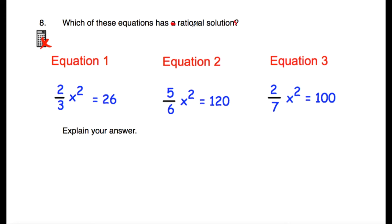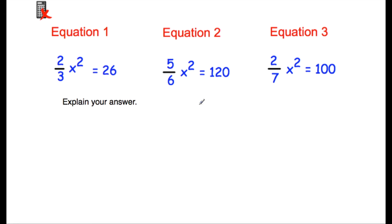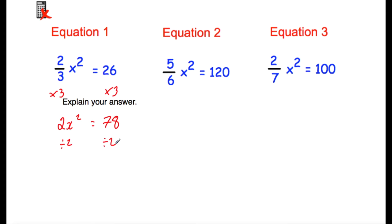Question number eight asks: which of these equations have rational solutions? We have three equations. Let's solve equation one first. I'd multiply both sides by three to remove the denominator, giving two x squared equals 78. Dividing by two, x squared equals 39. The square root of 39 is irrational, so x equals plus or minus the square root of 39 — those solutions are irrational.